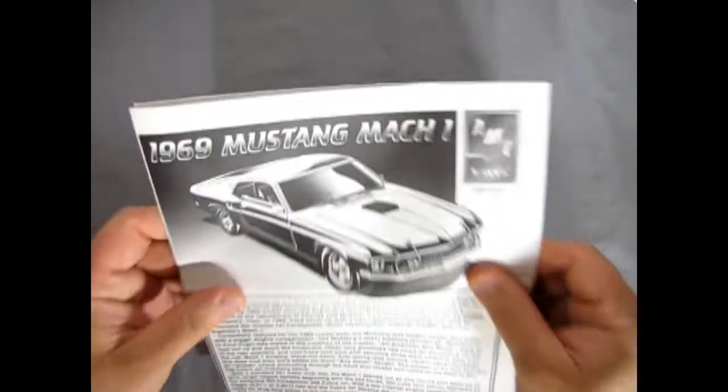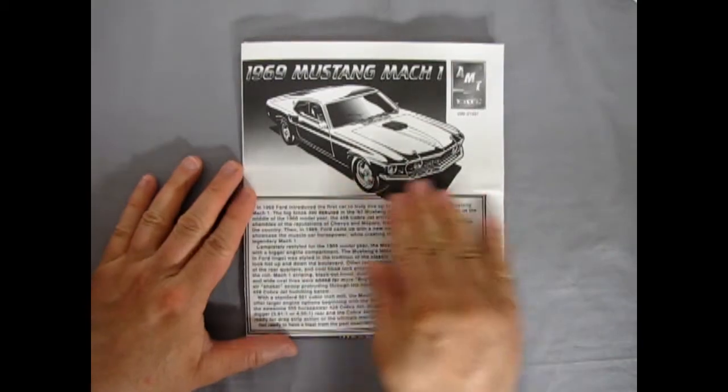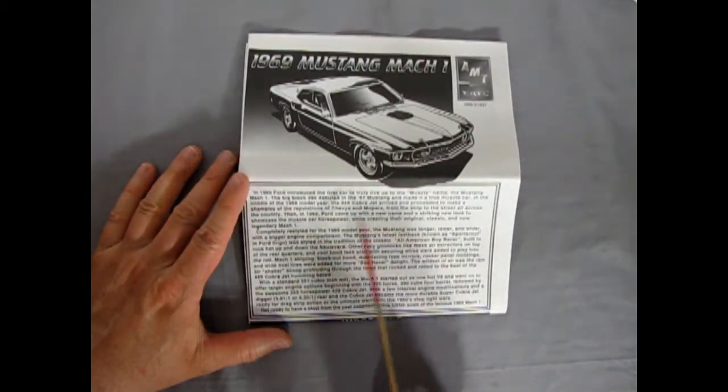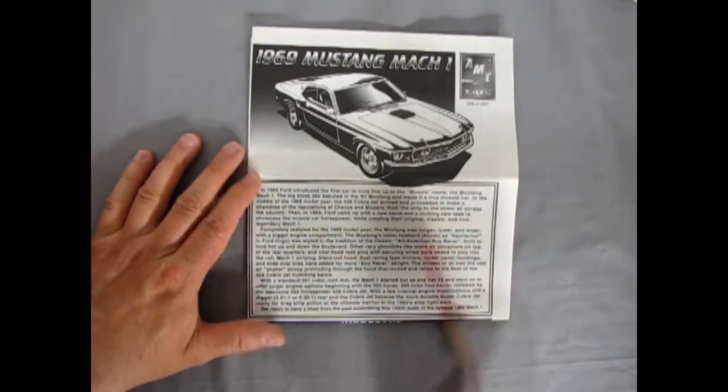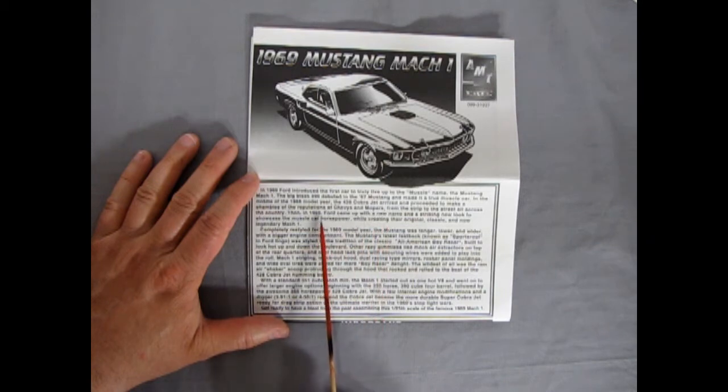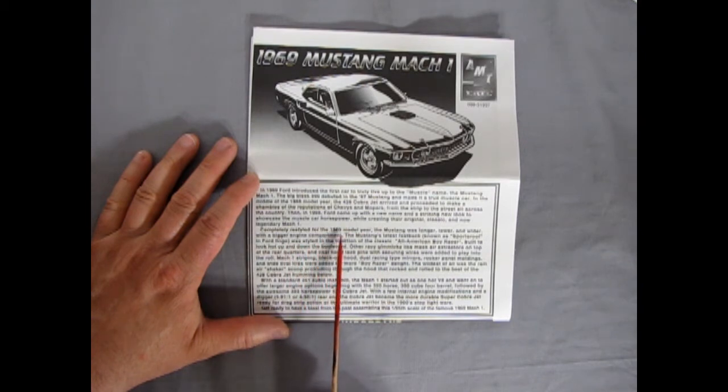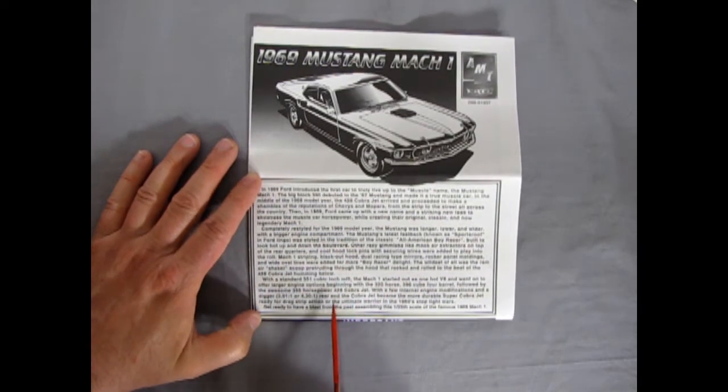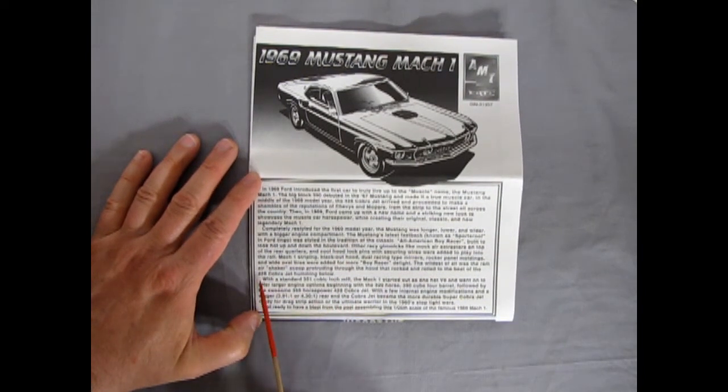And if we flip these open, we can see that it had a great history under here, but just to sort of speed it up a little bit while we're on film, it does say that in 1968 they put in the 428 Cobra jet into the Mach 1 69. In 69 Ford came up with a new name and striking new look to showcase the muscle car horsepower, while creating their original classic and now legendary Mach 1. Completely restyled for 69 model year, the Mustang was longer, lower and wider with a bigger engine compartment.